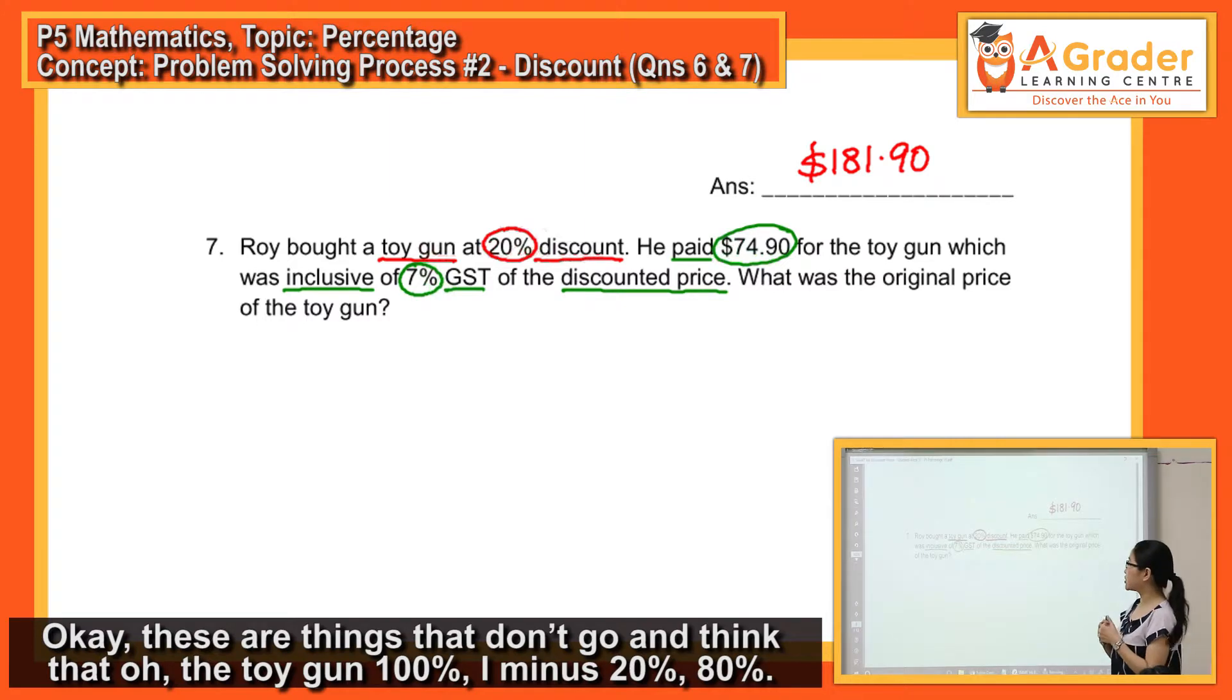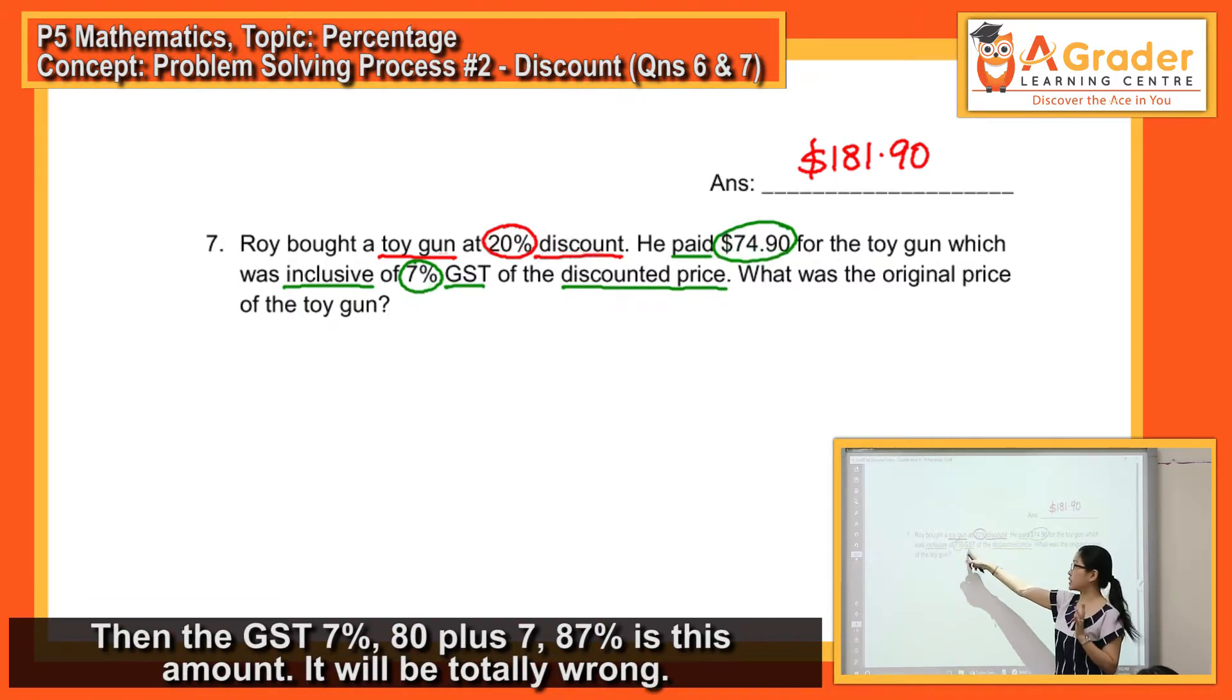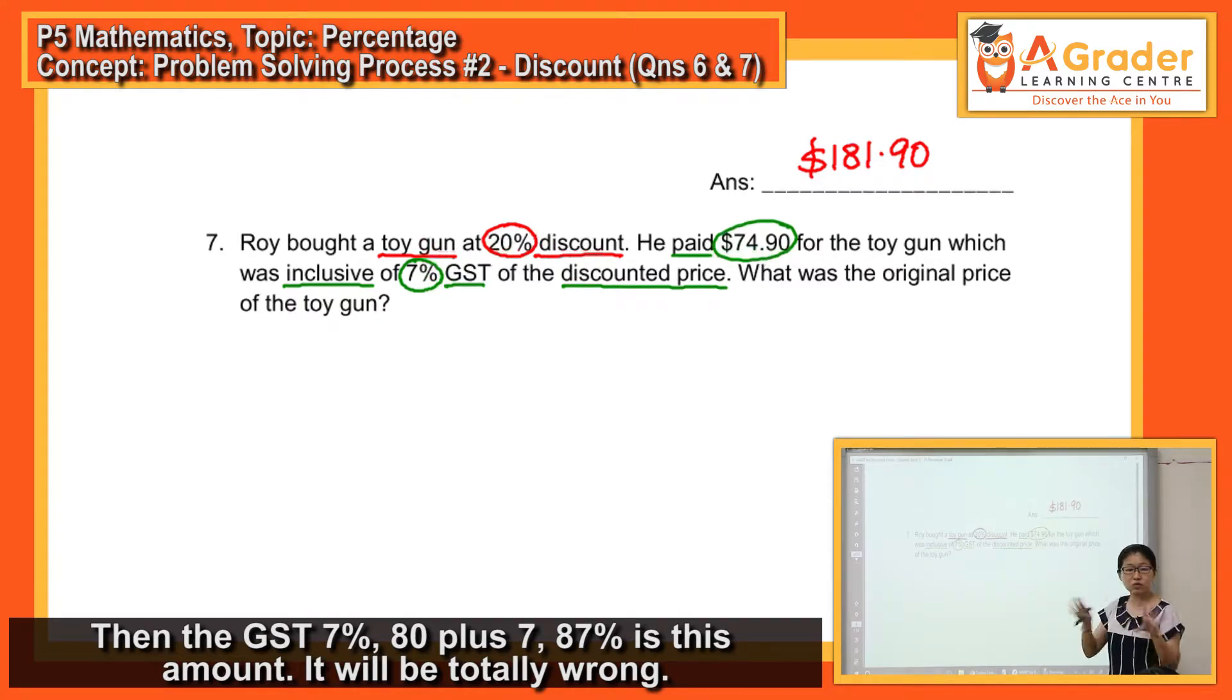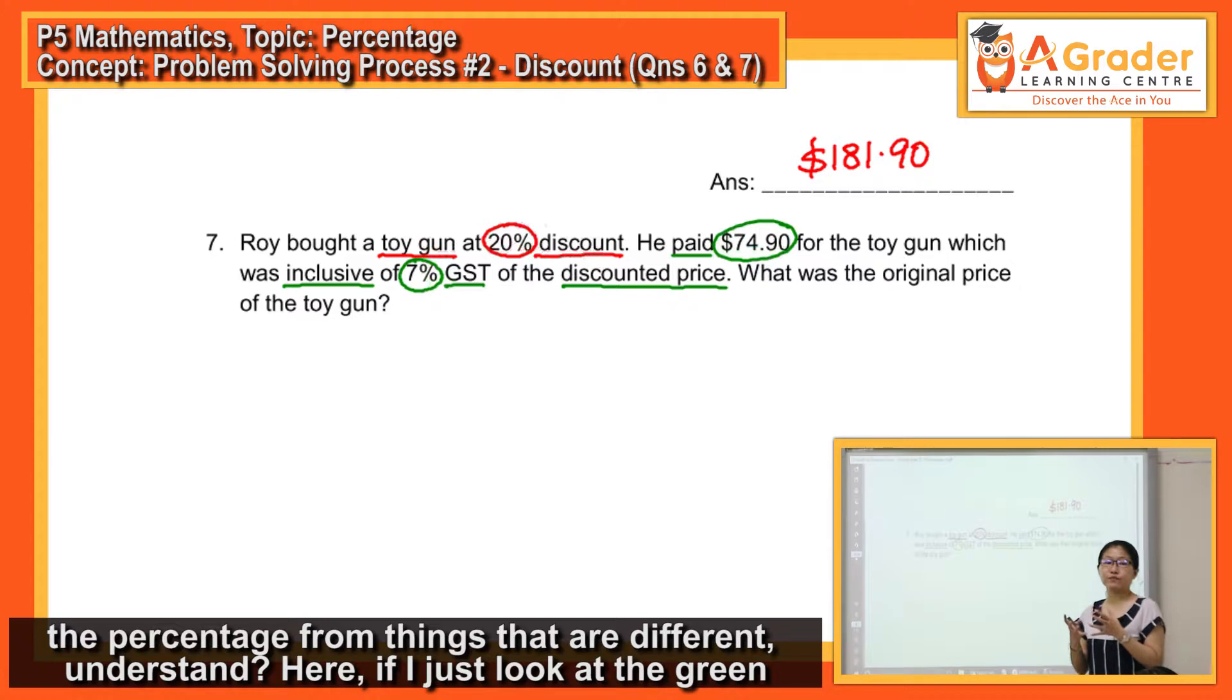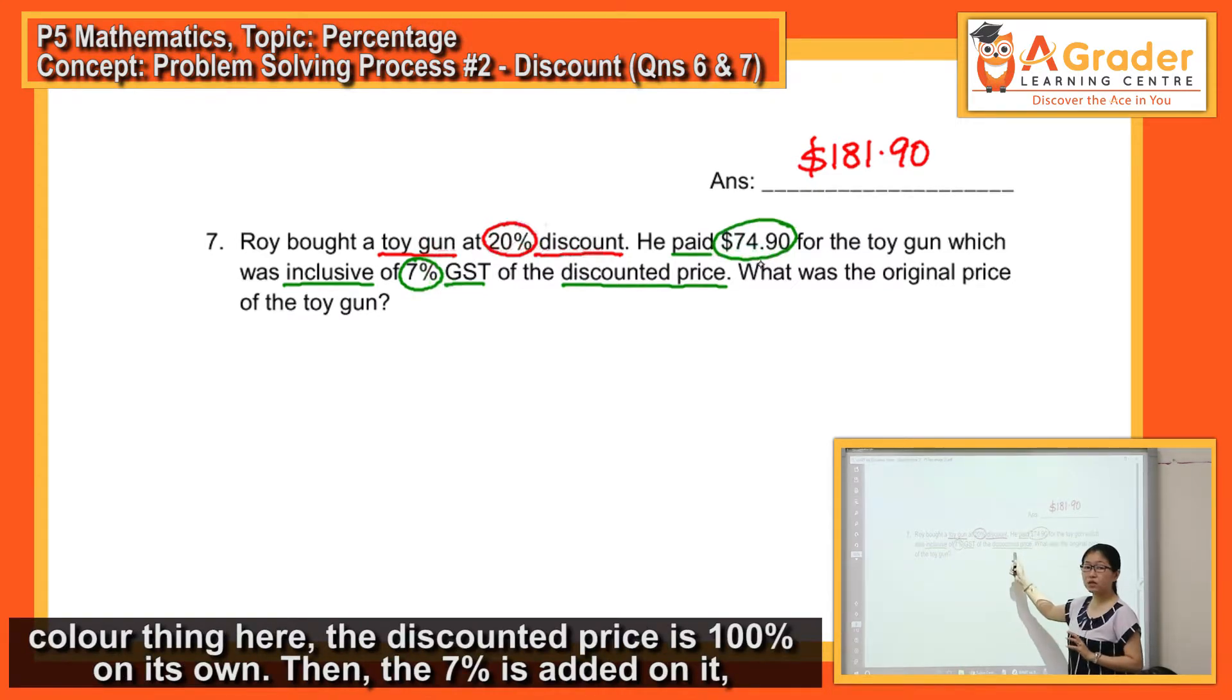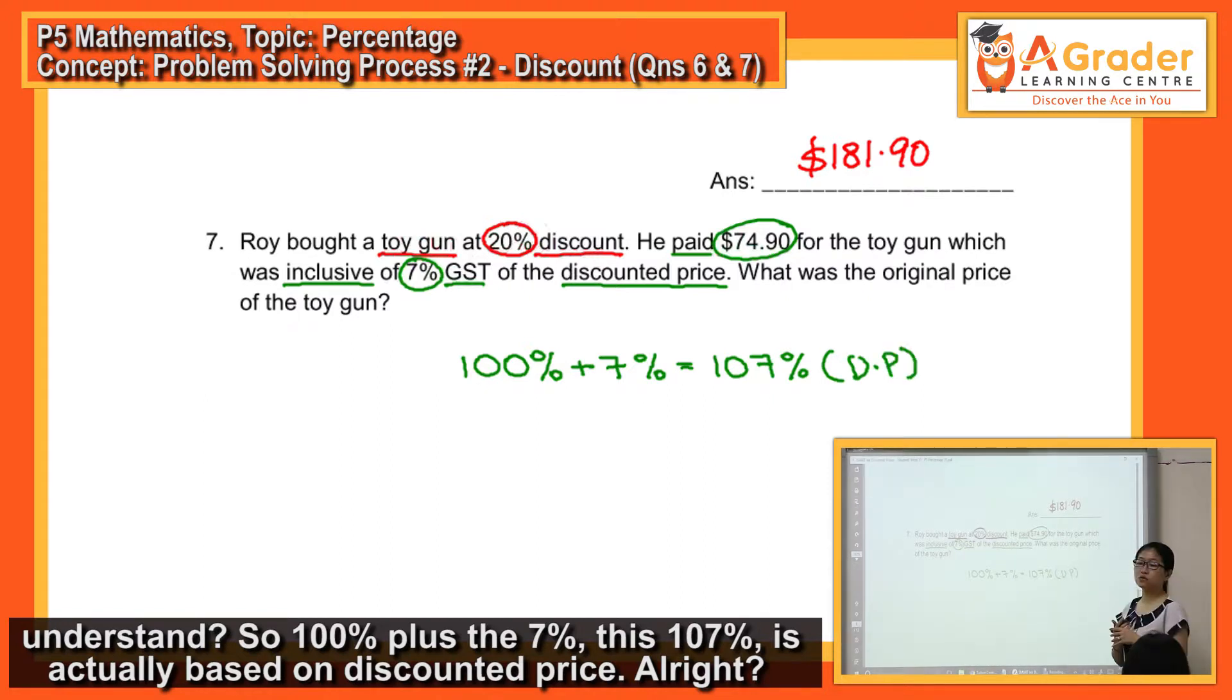So, these are the things that don't go and just think like this. Oh, the toy gun 100%. I minus 20%, 80%. Then the GST 7%, 80 plus 7, 87% is this amount. It will be totally wrong. Because like what I said earlier on, this is a different total. So, you cannot just add or minus the percentage from things that are different. Here, if I just look at the green color thing here, the discounted price is 100% on its own. Then the 7% is added on it. So, 100% plus the 7%.